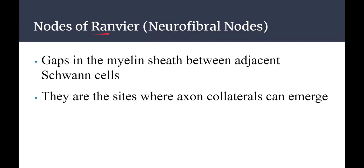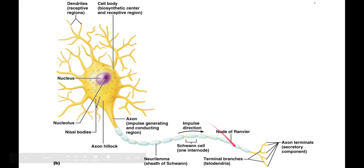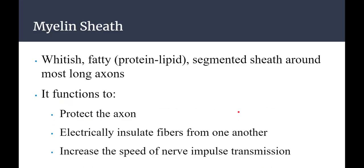The nodes of Ranvier — also called neurofibril nodes — are the gaps in the myelin sheath between adjacent Schwann cells. These are where axon collaterals can emerge. You can see these spaces between the myelin segments in the diagram. Ranvier was a French histologist — that's why it has that great-sounding name.